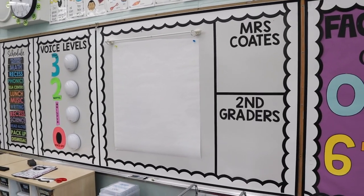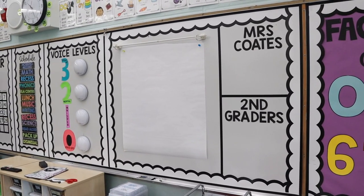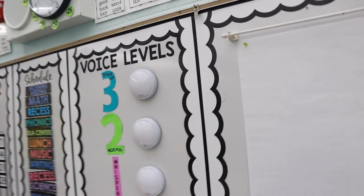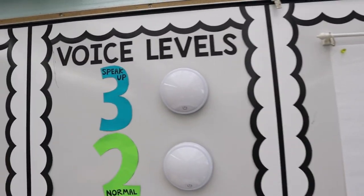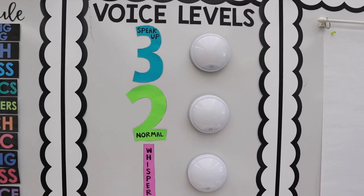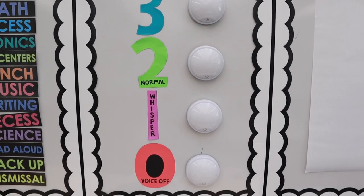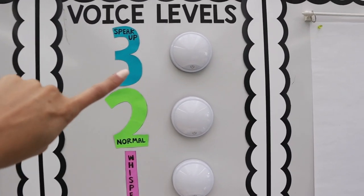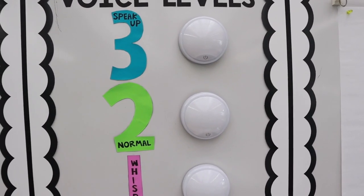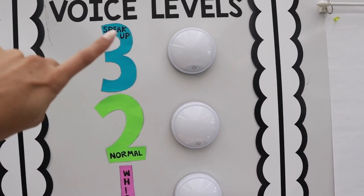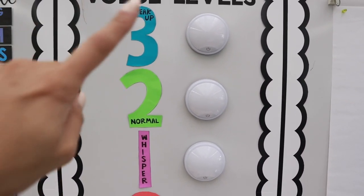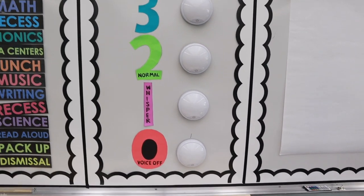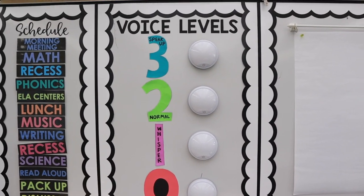All of the headers are finished. The Cricut makes it so easy. Here I have my voice levels: speak up, normal, whisper, and voice off. I had already cut these out using my Cricut — I actually have another vlog where I show you how to cut out images. This set, I believe it's free and it's from Miss Fifth on TPT — I will link it down below. These are just battery operated push lights; some of them need batteries switched out, but this worked really well for us last year.